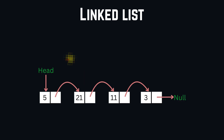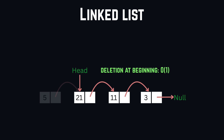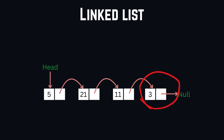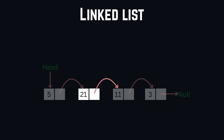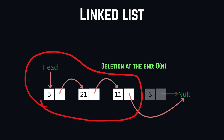Deletion works similarly. Removing an element at the head is lightning fast — we just move the head pointer one element forward, which only costs O(1). But when we want to remove the last node, we need to iterate through the list, stopping at the second-to-last node to set its pointer to null so the last element is no longer part of the list. Just like insertion at the end, this is O(N) because we need to iterate through almost the entire list.